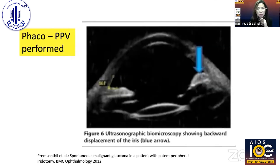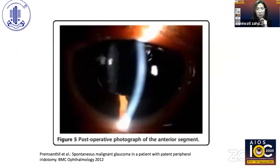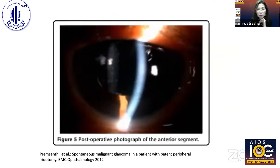After medical stabilization, she underwent phacoemulsification with IOL implantation to remove her nuclear sclerotic cataract, combined with PPV. Post-operatively, UBM showed a very deep anterior chamber, with a clear cornea and deep AC in a pseudophakic eye after PPV.